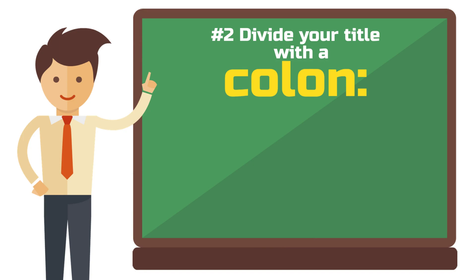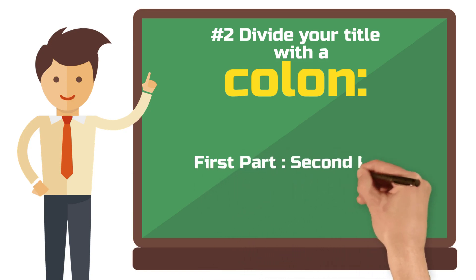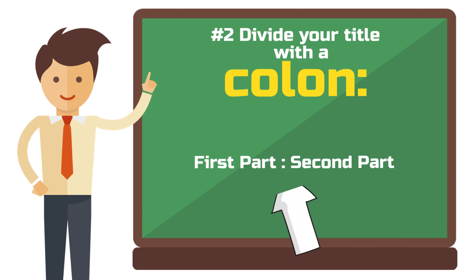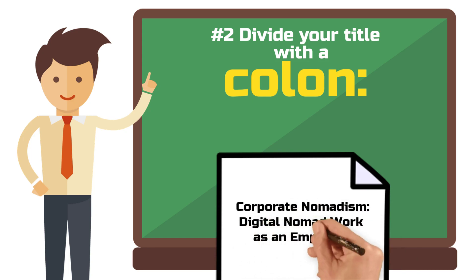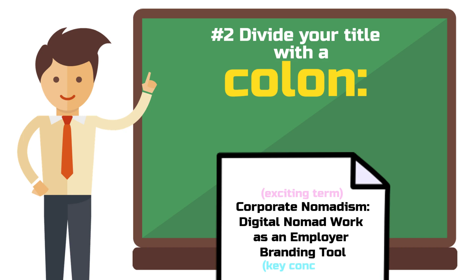The next title hack is the separation by a colon. This way you split your title into two parts and double your design possibilities. You can still name the most important terms in a reasonable way and additionally throw in an exciting or polarizing statement. Let's try the whole thing with the example: 'Corporate Nomadism: Digital Nomad Work as an Employer Branding Tool.' These two parts allowed me to accommodate an additional notion — corporate nomadism — which makes the title even more interesting, because that terminology is not well established and rather thought-provoking.